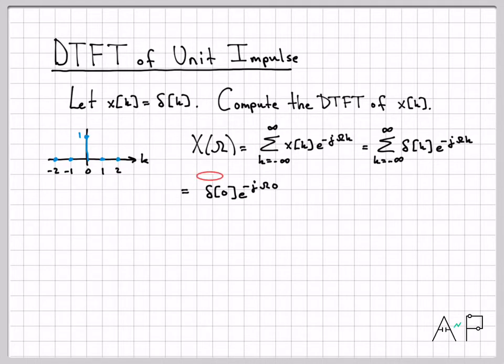The only term that is not zero is the term of k equals zero. At k equals zero, I replace all the k's with k equals zero. So I have delta of zero times e to the minus j omega zero. Obviously, our signal delta is equal to one at zero, and then e to the zero is always one. So one times one is one. That is the DTFT of the unit impulse.